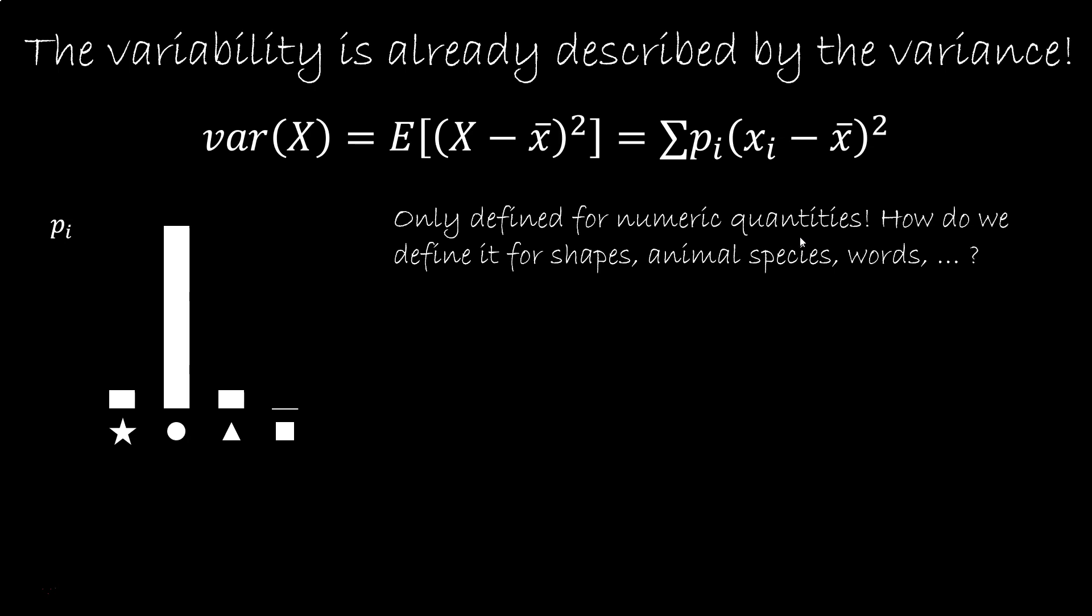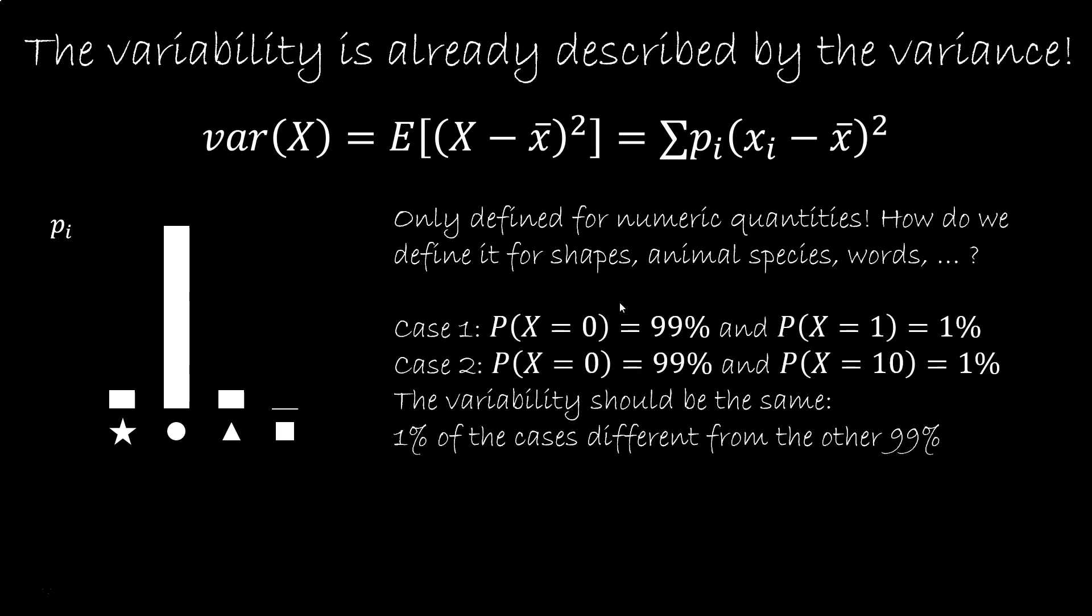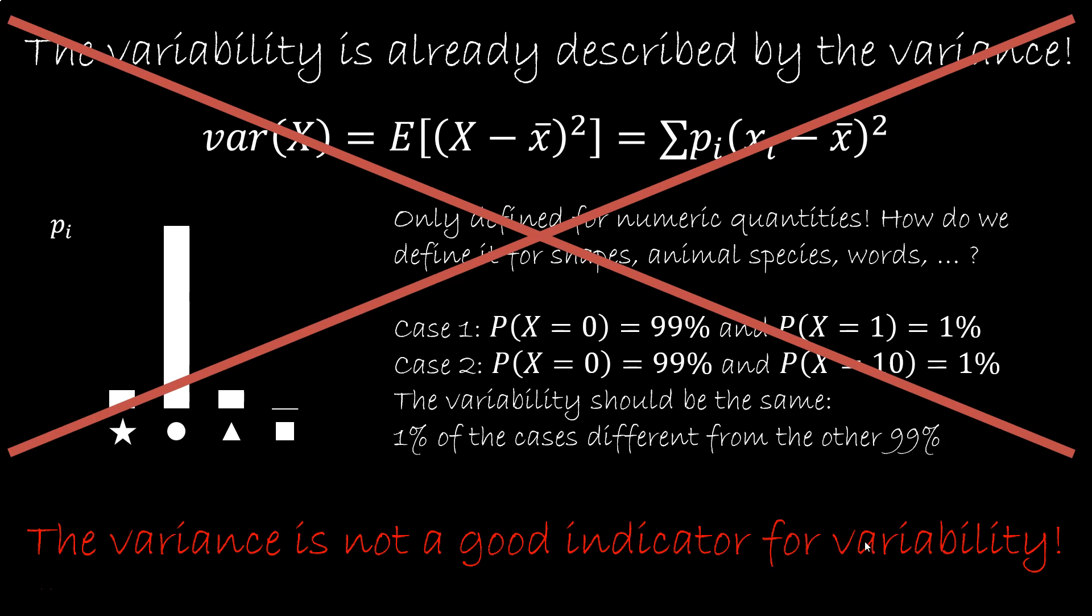But even for numeric quantity, the variance does not work. Suppose we have two cases. In both, x equals 0, 99% of the time. And for the rest, in the first case you have x equals 1, and in the second, x equals 10. Now the variance will be different, but the variability is the same. 99% of the cases are similar to each other, and the remaining 1% are similar to each other. So the elements are similar to each other in the same way. So no, the variance is not a good indicator for variability.